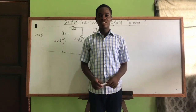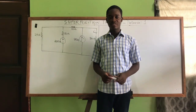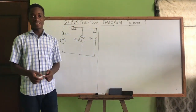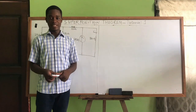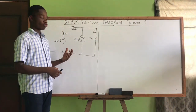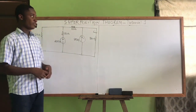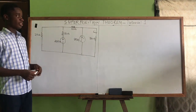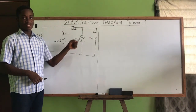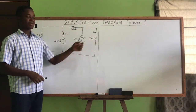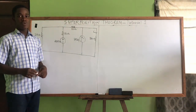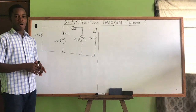Hello guys, welcome to today's tutorial on superposition theory. In our previous videos we've learned about the mesh current method and the node voltage method used to analyze a given circuit which contains two or more sources. In this video we are going to use the superposition theory to calculate for the current i₀, that is the current flowing through the 30 ohms resistor.